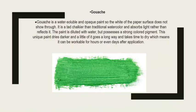Gouache is a water-soluble and opaque paint, so the white of the paper surface does not show through. It is a tad chalkier than traditional watercolor and absorbs light rather than reflects it. The paint is diluted with water but possesses a strong colored pigment. This unique paint dries darker, and a little goes a long way — it takes time to dry, which means it can be workable for hours or even days after application.